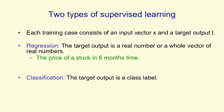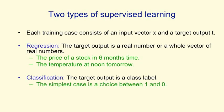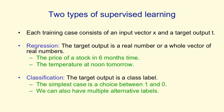Supervised learning itself comes in two different flavours. In regression, the target output is a real number or a whole vector of real numbers, such as the price of a stock in six months' time or the temperature at noon tomorrow, and the aim is to get as close as you can to the correct real number. In classification, the target output is a class label — the simplest case is a choice between one and zero, between positive and negative cases — but we can have multiple alternative labels, as when we're classifying handwritten digits.